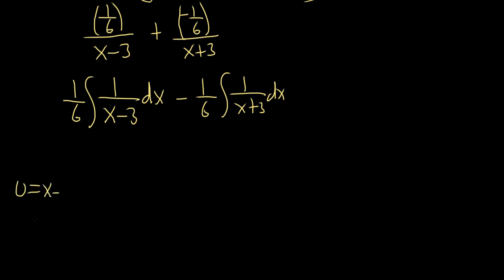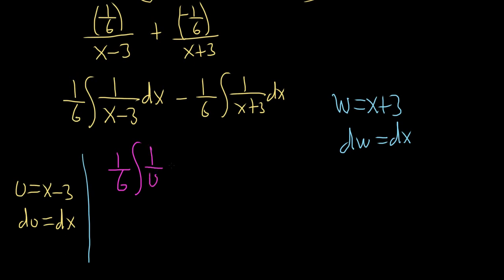So u is x minus 3, du is dx. And then for the one over here on the right, I'll use a different letter. How about w is x plus 3, dw is dx. So rewriting what we have, we end up with 1 sixth integral, so 1 over u because u is x minus 3, du minus 1 sixth. And then 1 over x plus 3, so that was 1 over w, dw.